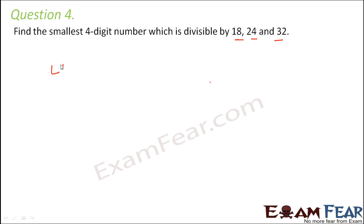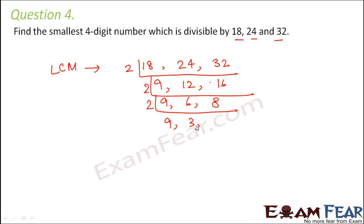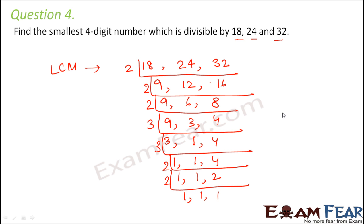So let us find out the LCM. So 2 into 9 is 18, 2 into 12 is 24, 2 into 16 is 32. Now again it would be 2 into 6 is 12, 2 into 8 is 16. Then again 2 into 3 is 6, 2 into 4 is 8. Now this would be 3 into 3 is 9, 3 into 1 is 3, and this is 4. So this would be 3 into 1 is 3, then 1, 4. So this would again be 2, 1, 1, 2 and finally 1, 1, 1.